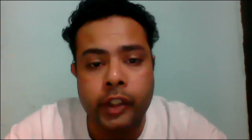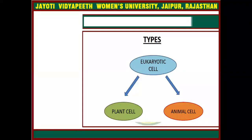First, let me introduce what are the eukaryotic cells. 'Eu' means true and 'karyon' means nucleus. The cells which have a true nucleus are known as the eukaryotes. The nucleus of the eukaryotes is surrounded by a nuclear membrane.